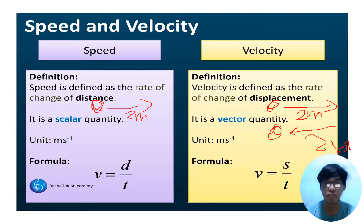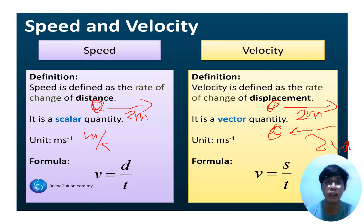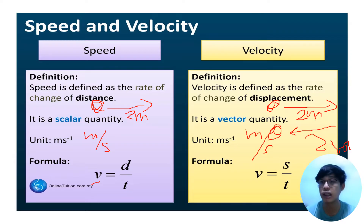When it comes to their units, speed and velocity use the same units — meter per second. For their formulas: speed is equal to distance over time, while velocity is equal to displacement over time.